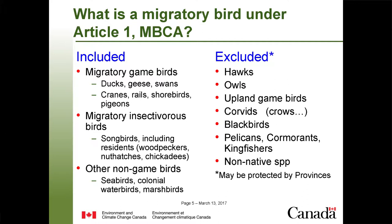Another nuance of the act is the definition of a migratory bird. You have to put yourself back 100 years to 1916 when the act came together. Included are migratory game birds and migratory insectivorous birds — which includes resident species like chickadees, nuthatches, and woodpeckers — as well as other non-game birds: seabirds, colonial waterbirds, and marsh birds. Excluded are raptors, corvids, crows, blackbirds — things considered agricultural pests — and some others like pelicans, cormorants, and kingfishers, which were considered competition for fishers.